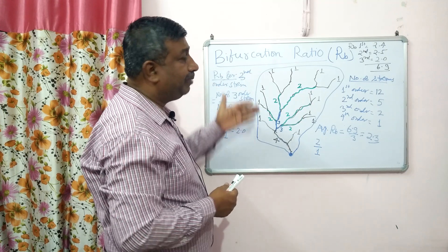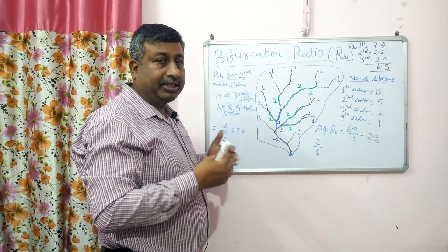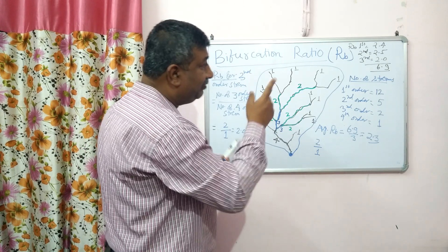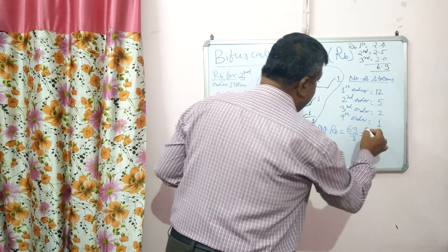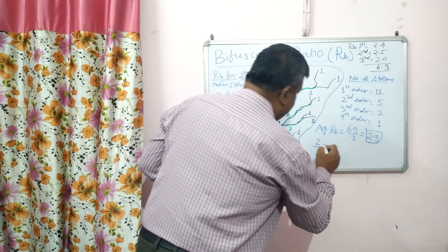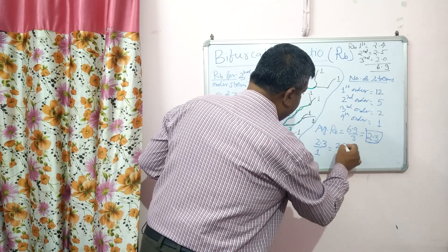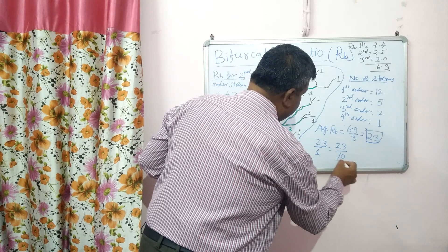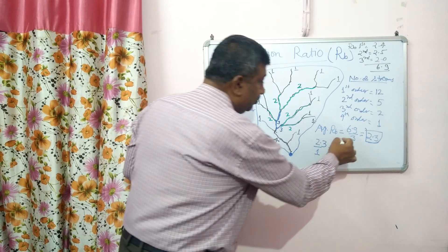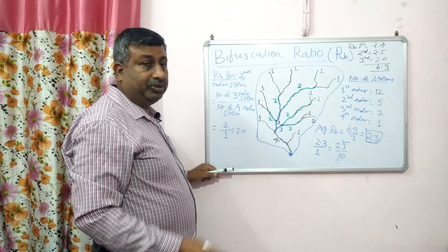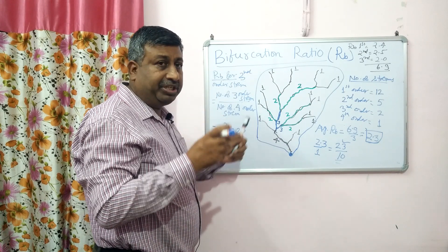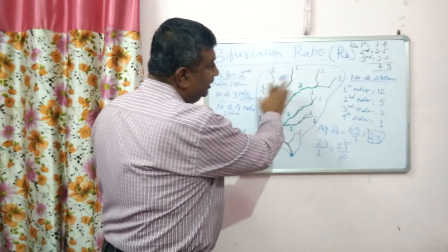We can calculate the branching pattern of first order, second order, and third order, and similarly the average value of 2.3. This means 23 upon 10 — 10 streams are formed when 23 small streams join together throughout the watershed.